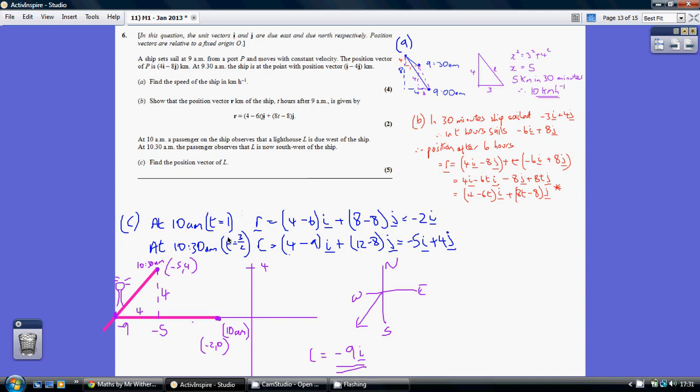Now for part C, at 10am that's when t is 1. So I've just substituted 1 into the formula, into the position vector, and that gave us at 10am his position is minus 2i, and at 10:30am his position vector is minus 5i plus 4j.